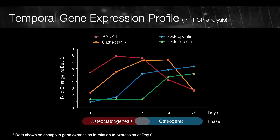Is there any evidence that can support this idea? If we look at the markers of the osteoclasts, for example, in this graph, you can see RANK ligand as one of the markers of osteoclasts, or cathepsin K.